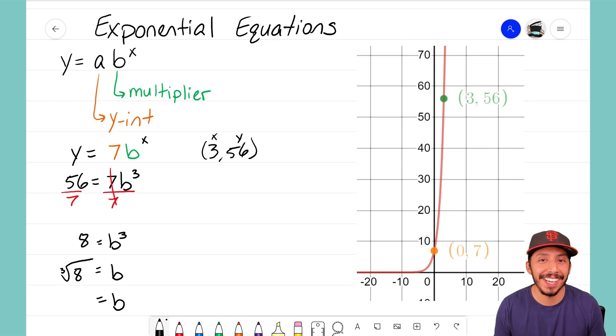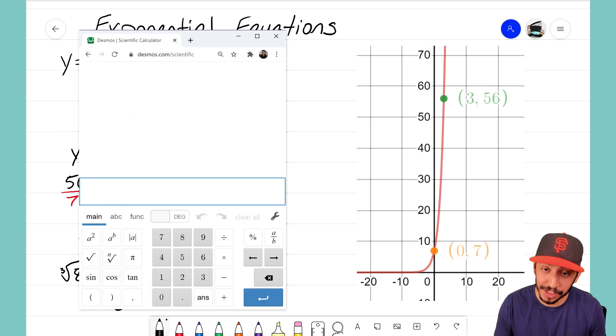So I take the cube root of 8 and some of you might know that on the top of your head. Some of you may not know, so if you don't know let's go ahead and use our calculator to figure out what the cube root of 8 is. So if I'm using my free online calculator powered by desmos.com I see that right here I have the square root button but I also have an n root button.